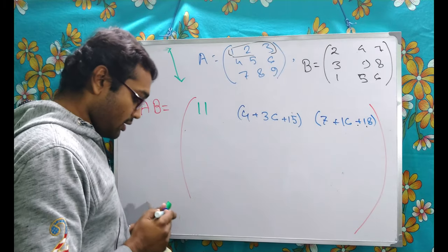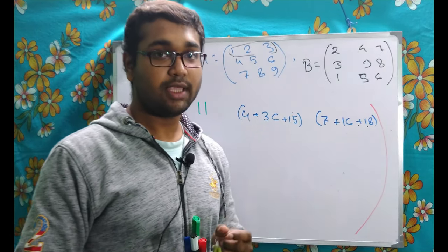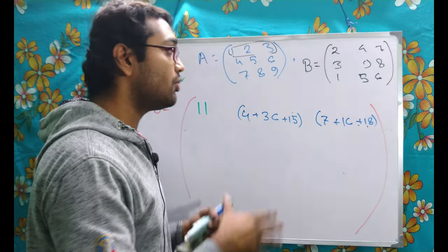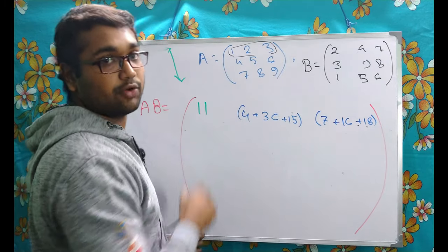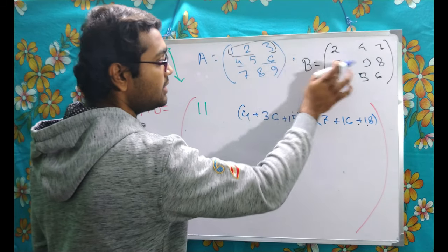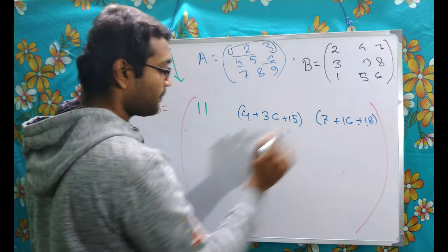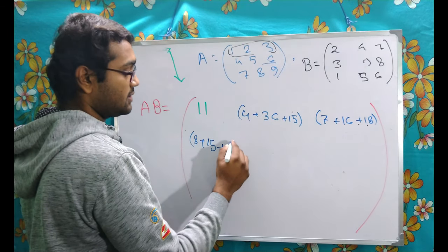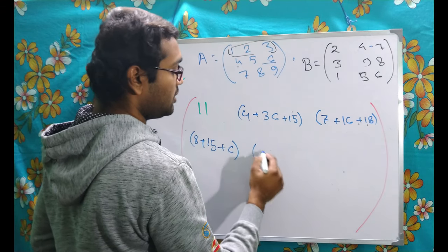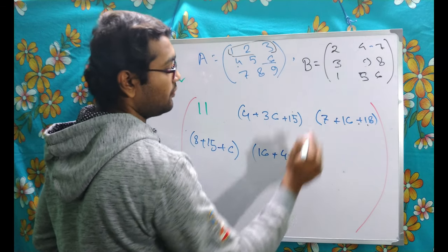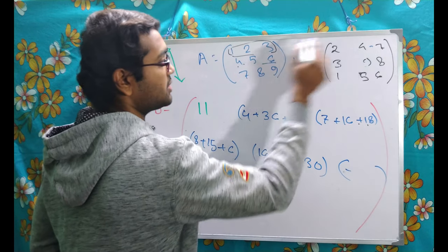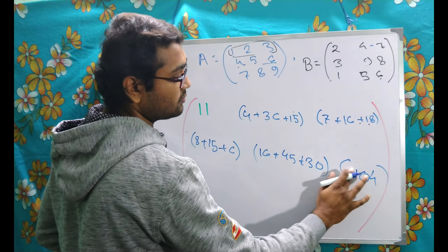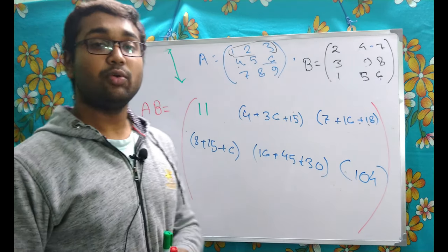Next comes the second row. We have done with the first row of matrix A — that row worked with the first column, second column, and third column. So we move to the second row: 4, 5, 6. For (2,1): 4×2 = 8, 5×3 = 15, 6×1 = 6, summing to 29. For (2,2): 4×4 = 16, 5×9 = 45, 6×5 = 30, giving 91. Then for (2,3): 7×8 = 56, then adding more gives us the entry. All work of the second row is now done.